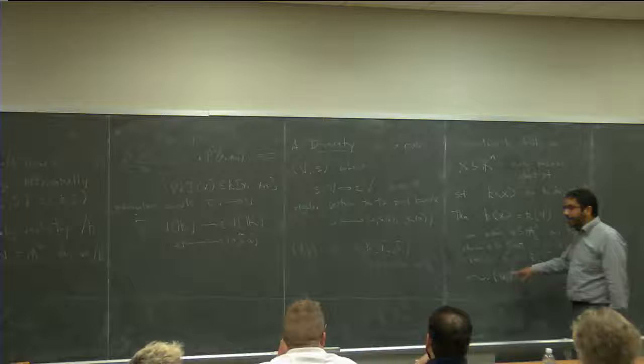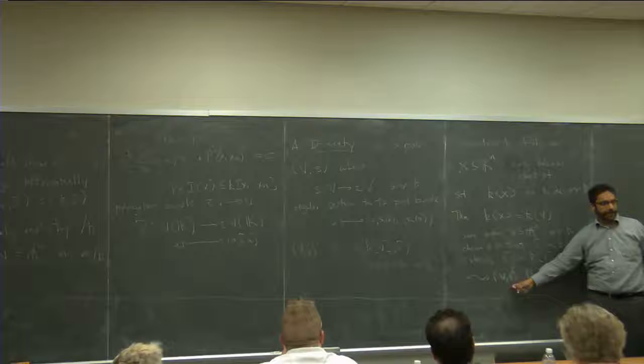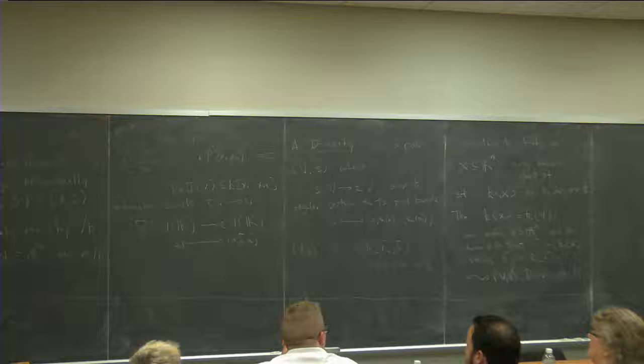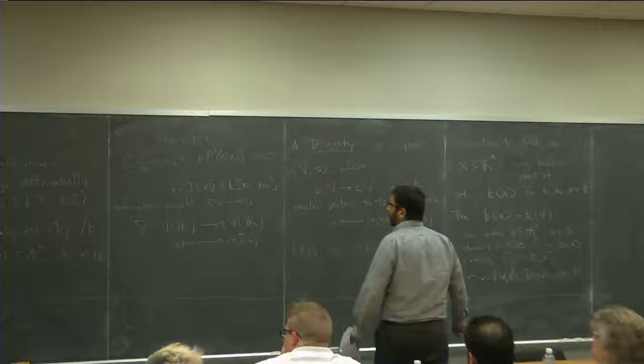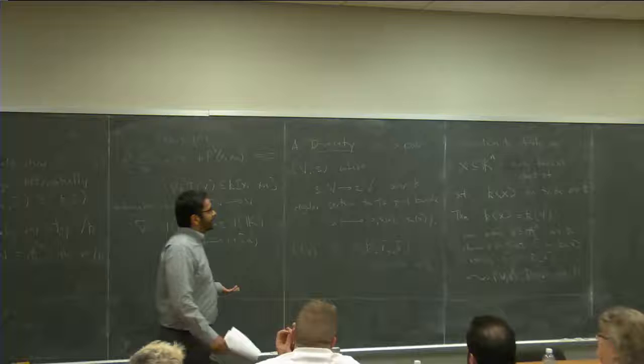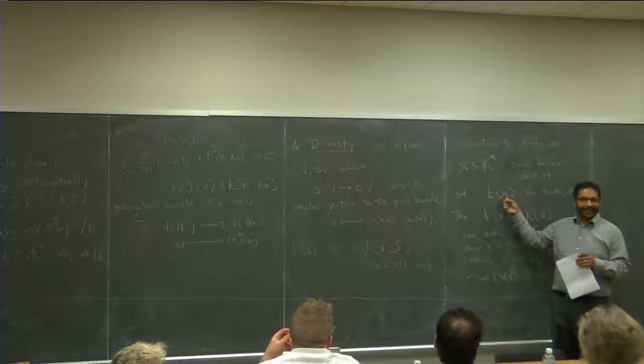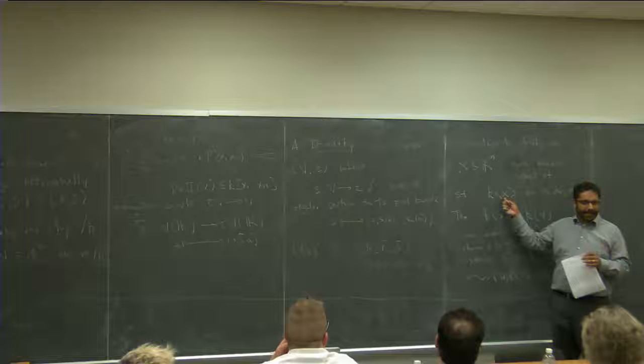I'm going to study these irreducible Kolchin closed sets of finite dimension by studying these D-varieties, which gives us a kind of algebraic geometric way of viewing finite-dimensional differential algebraic varieties as a reduct of algebraic geometry in some sense. The reason it goes through is that the difficulties in the partial case happen really when the transcendence degree is infinite. In finite transcendence degree, anything you do in one derivation can essentially be done in several.